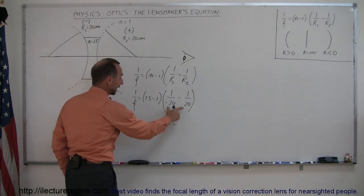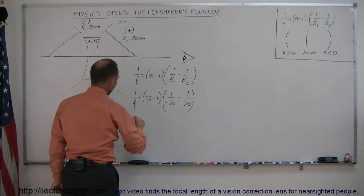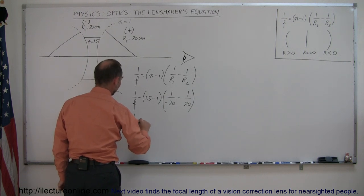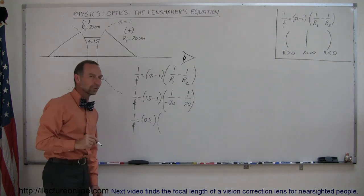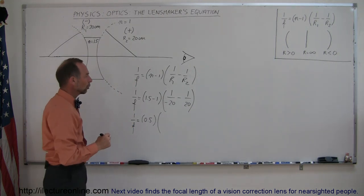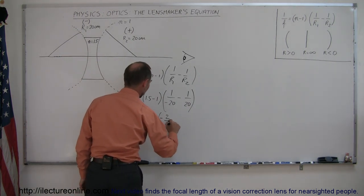Now notice that both terms in here are negative. So we have 1 over F is equal to 0.5 times negative 1/20th added to a negative 1/20th. That's negative 2/20th, negative 2 over 20.